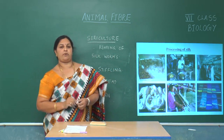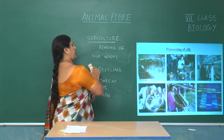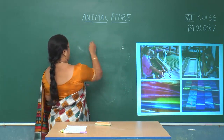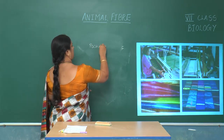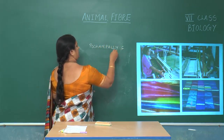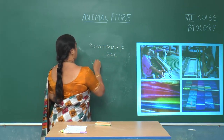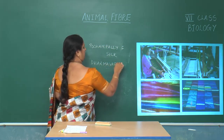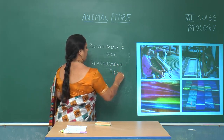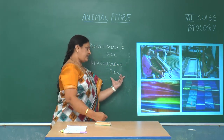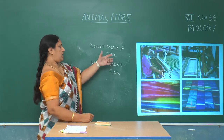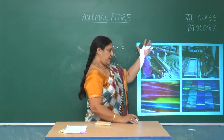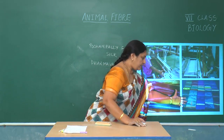The various silk fabrics produced are of the following types: Pochampalli silk, Dharmavaram silk, etc. Their names are given after their place of production. So, from the moth stage, silk fabrics of these types are finally produced.